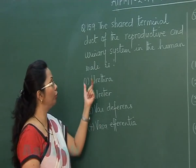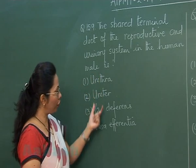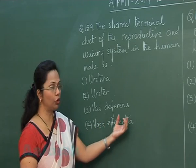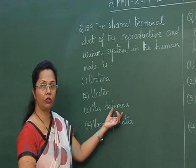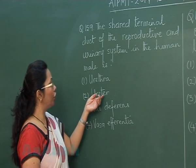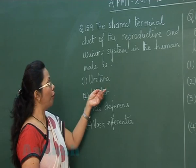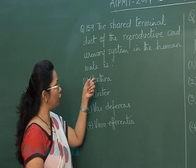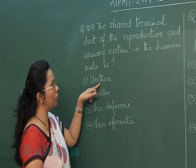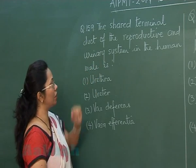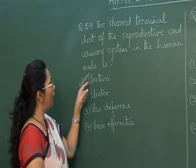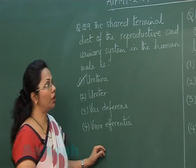Question 159: The shared terminal duct of the reproductive and urinary system in the human body is which of the following? Vasa efferentia conducts sperm from the rete testis to the epididymis. Vasa deferentia conducts sperm from the epididymis to the ejaculatory duct. The ureter conducts only urine. The ejaculatory duct opens into the urethra, and the urethra conducts both semen and urine — so urethra is the common passage and the correct answer.